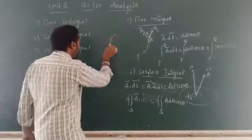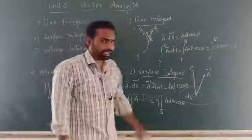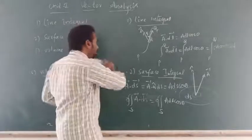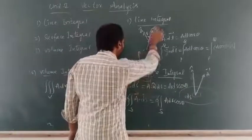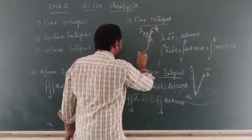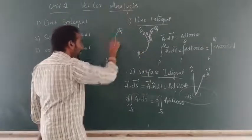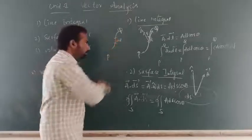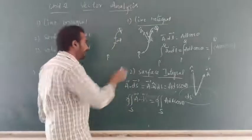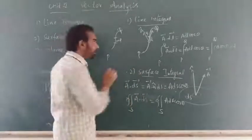The integration along the curve is nothing but the line integral. Mathematically, let us consider a curve PQ. In the diagram, we are taking a curve PQ and on it we are taking a small element DL. This curve is in a vector field A-bar.